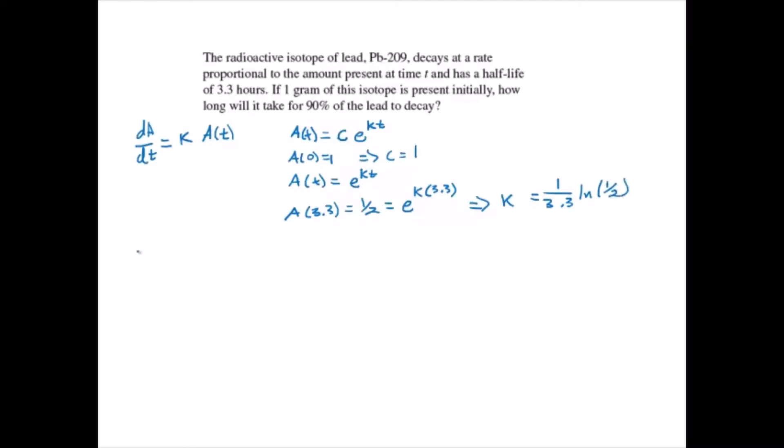Next we solve for how long it will take for 90% of the lead to decay. So 90% of the lead to decay is 1 times 1 minus 0.9 which is 0.1. So we have A(t) is equal to 0.1 which is equal to e to the k, which is 1 over 3.3 natural log of 1/2, times t.